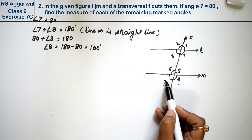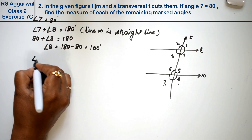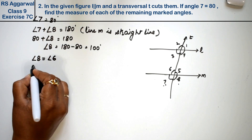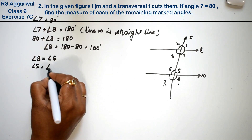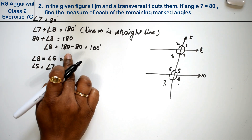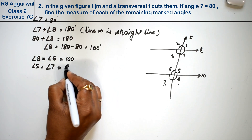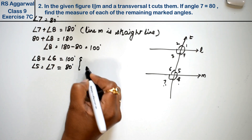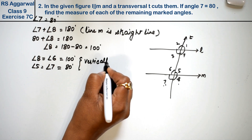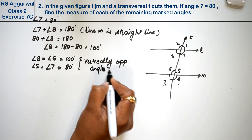Angle 8 is equal to angle 6, and similarly angle 5 is equal to angle 7, so angle 5 is 80 degrees. Why are these two equal? Because vertically opposite angles are equal.